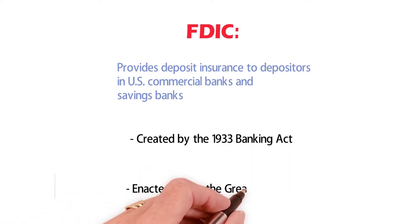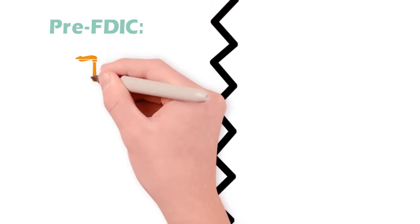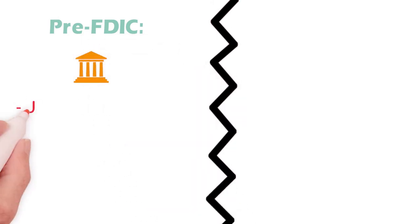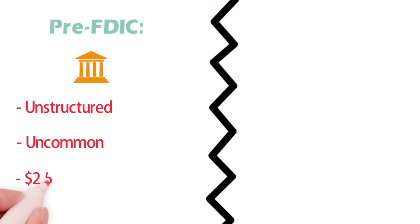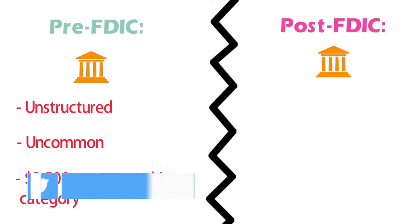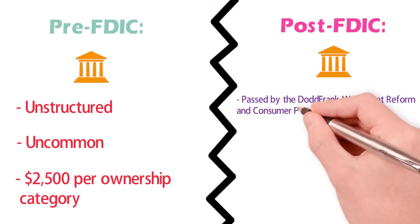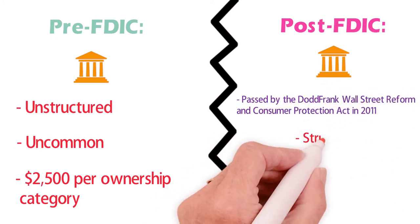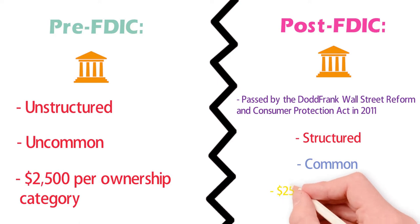The FDIC was created by the 1933 Banking Act, enacted during the Great Depression, to restore trust in the American banking system. More than one-third of banks failed in the years before the FDIC's creation, and bank runs were common. The insurance limit was initially $2,500 per ownership category and was increased several times. Since the passage of the Dodd-Frank Wall Street Reform and Consumer Protection Act in 2011, the FDIC insures deposits in member banks up to $250,000 per ownership category.